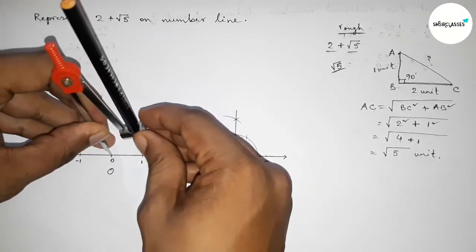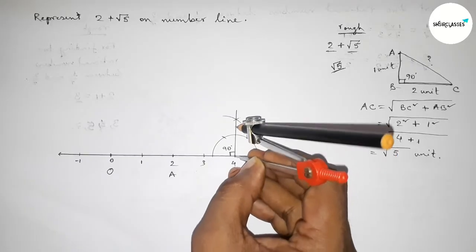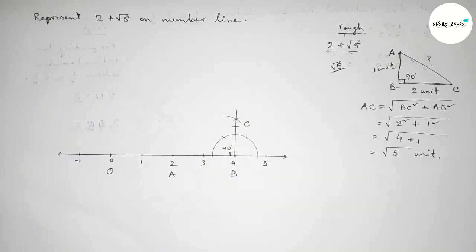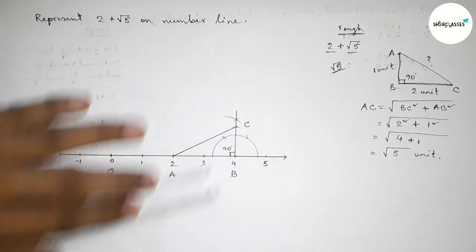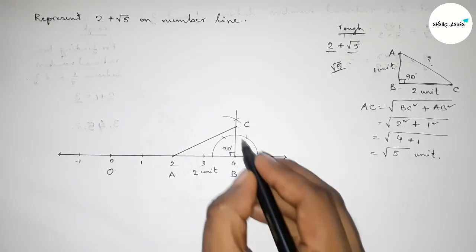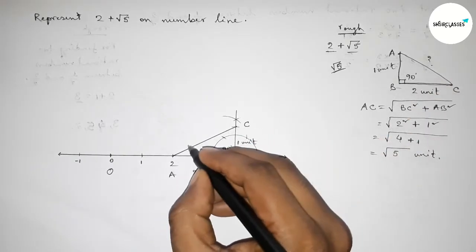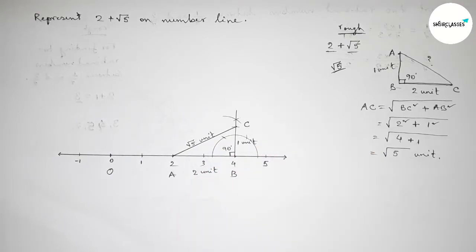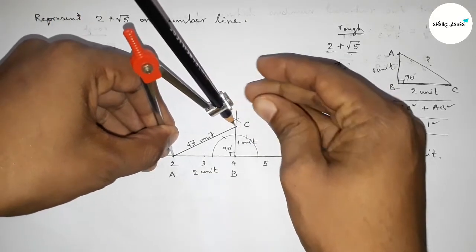Taking one unit length between any two numbers using compass and placing the compass on point B, cutting here to get point C. Now joining A and C — this side is 2 unit length and this side is 1 unit length. From this we can say that AC is always root 5 unit length.